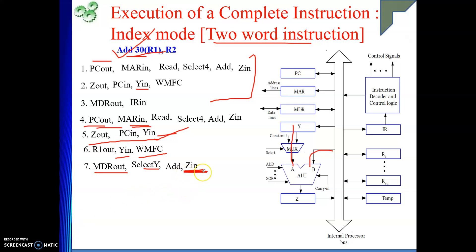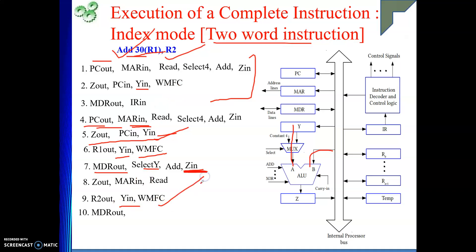This effective address now needs to be transferred to MAR. So Z out, MAR in. Then read — we issue the read signal. Then R2 out, Y in — putting R2 into the Y register for the next addition. Then WMFC. Once we come out of WMFC, data is in MDR. So MDR out, select Y, then add, then Z in. Then from Z register, transfer the result to R2: Z out, R2 in. End.